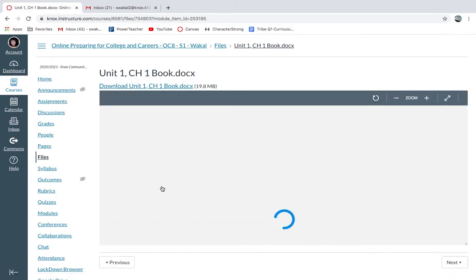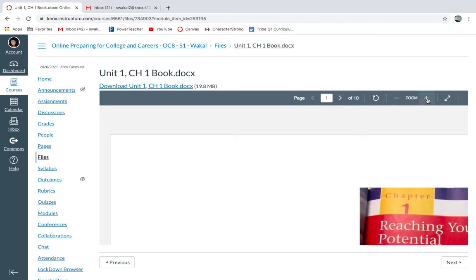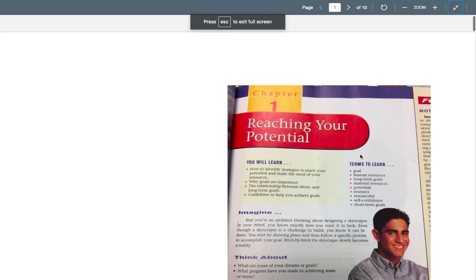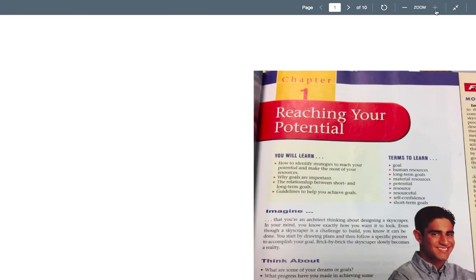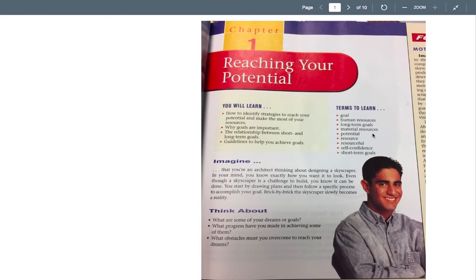This is where I have my book copied and you shouldn't have to click on download up here. It should automatically load for you, and most of you figured that out from my class last year. I'm going to make this screen a little bit bigger because I have old eyes. Okay, so this chapter is called Reaching Your Potential. These are the vocabulary words right here — terms to learn. I think there's nine here that you have to look up.